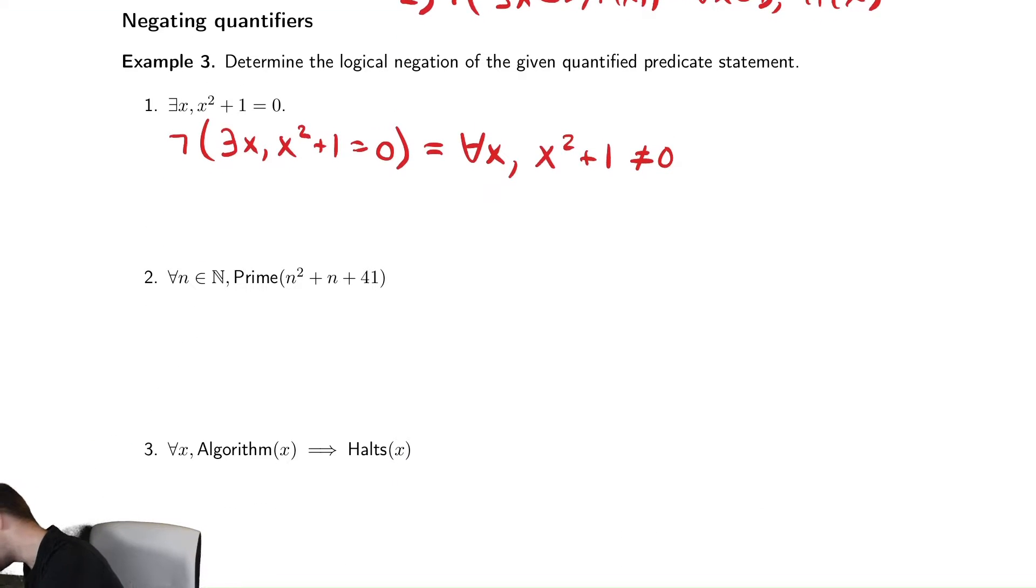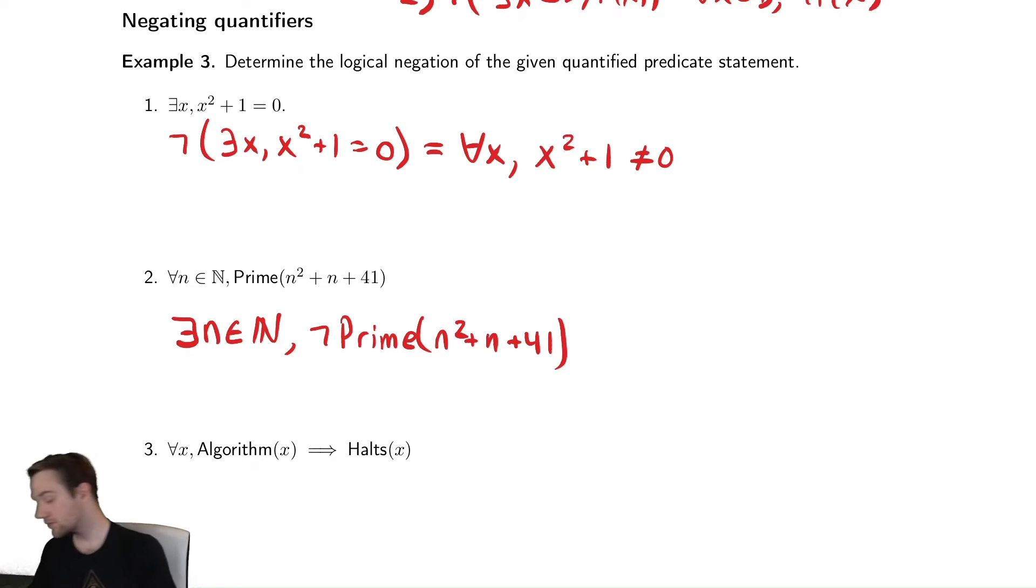Similarly, for our next one, for all n, that equation is prime. The opposite of that is there exists an n such that it is not prime. So not prime n squared plus n plus 41. So the opposite of a there exists is a for all, and the opposite of a for all is a there exists. And you just move the negation inside of the quantifier.